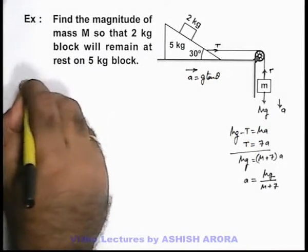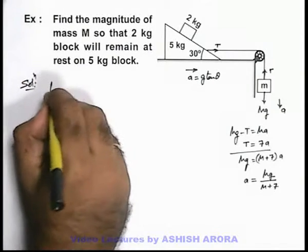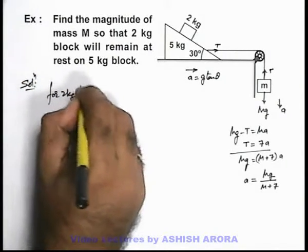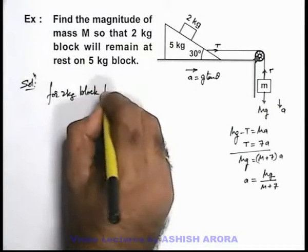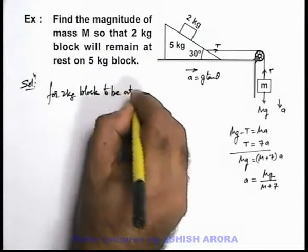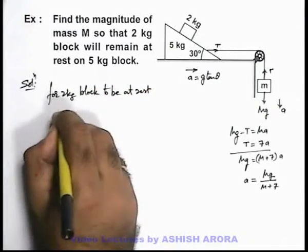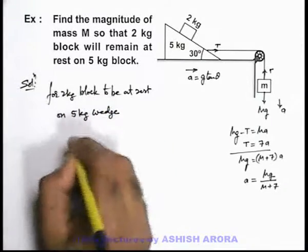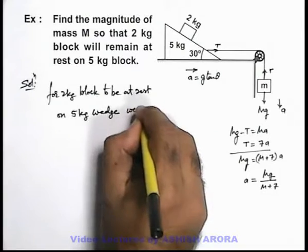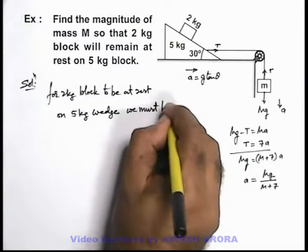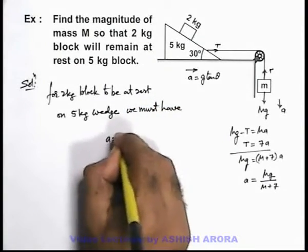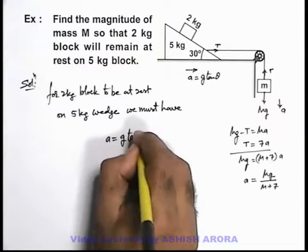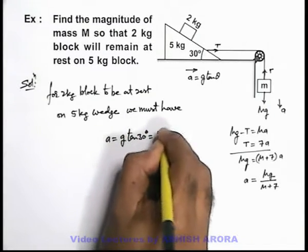So we can say for 2 kilogram block to be at rest on 5 kilogram wedge, we must have acceleration equal to g tan 30°. That'll be g/√3.